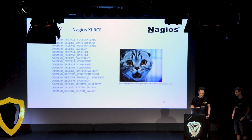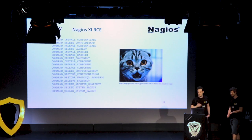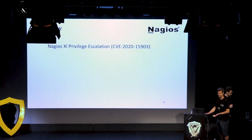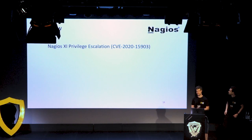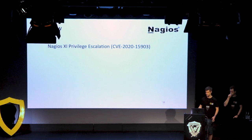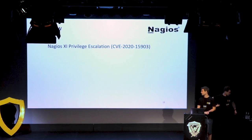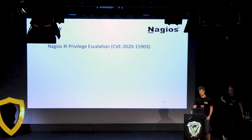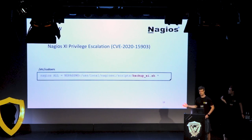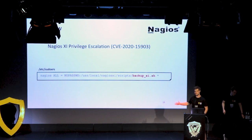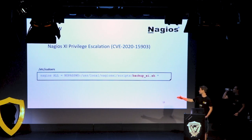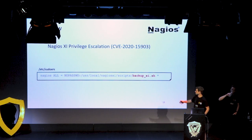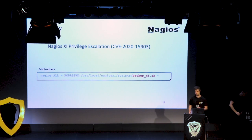That's being a normal user on Nagios. Now let's talk about getting root. When we chain those two vulnerabilities, we have a shell as the Nagios user, which is not root. So we need privilege escalation. After looking around on the system, we found the sudoers file with an entry saying the Nagios user is allowed to run a backup script without providing any password as root.